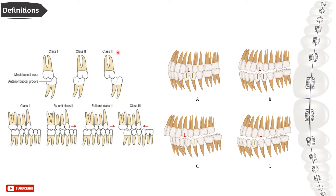These illustrations show the molar and canine relationships between upper and lower arches in different classes. For the first permanent molar: in Class 1, the mesiobuccal cusp of the upper 6 occludes with the anterior buccal groove of the lower 6; in Class 2, the mesiobuccal cusp is more mesial; and in Class 3, it is in a more distal position. For the canine: in Class 1, the upper canine cusp occludes between the lower canine and first premolar; in Class 2, it is mesial to the lower canine; and in Class 3, it is distal to the lower canine.